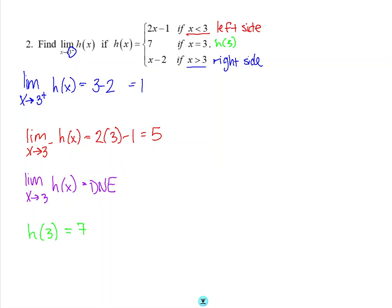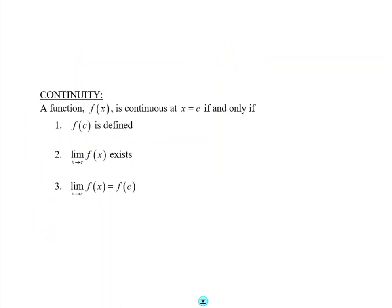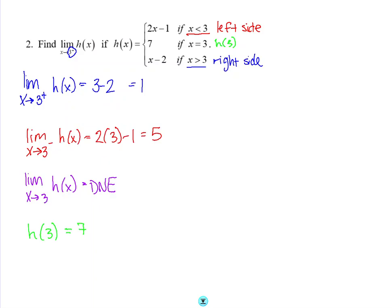Let's take a look at continuity. A function f of x is continuous at x equals c if and only if three things occur: one, f of c is defined; two, the limit as x approaches c of f of x exists; and three, the limit as x approaches c of f of x equals f of c. Going back to our previous example, h of x meets the first criteria — h of 3 is defined and equals 7 — but it fails criteria 2 because the limit as x approaches 3 does not exist. So this function is not continuous at x equals 3.